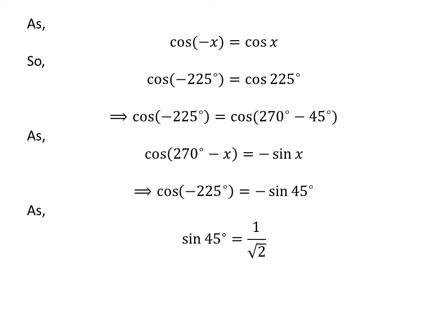We know the value of sine of 45 degrees is equal to 1 upon square root of 2. So the value of cosine of minus 225 degrees is equal to minus 1 upon square root of 2.